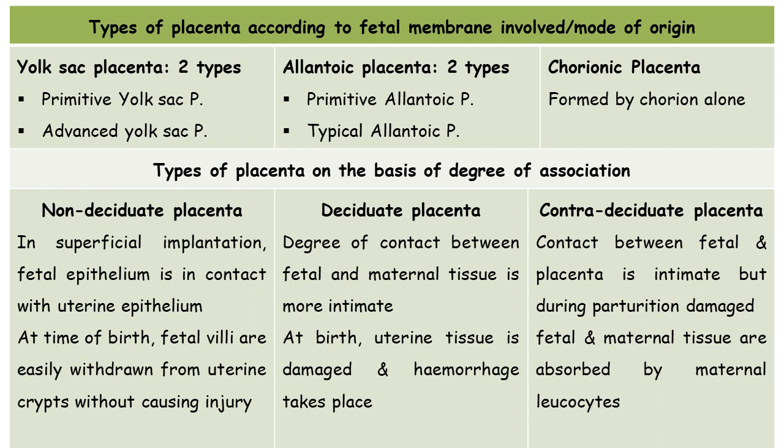The next classification of placenta is on the basis of degree of association, divided into three types: non-deciduate, deciduate, and contra-deciduate. In the non-deciduate placenta, the implantation of the embryo in the uterus is superficial — the embryo is loosely in contact with the uterine wall, with most of the fetus hanging in the uterine cavity. The fetal epithelium is in contact with the uterine epithelium, and at the time of birth, the fetal villi are easily withdrawn from the uterine crypts without causing any injury to the uterine wall.